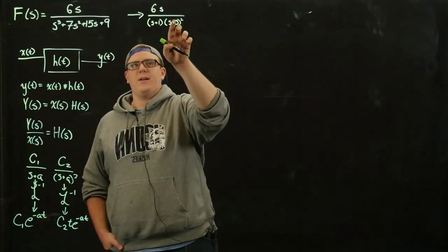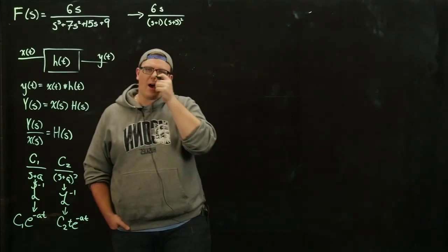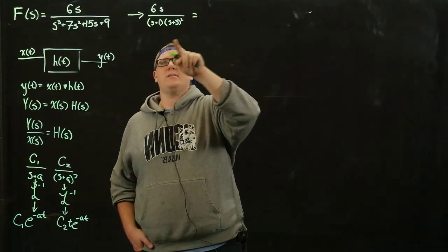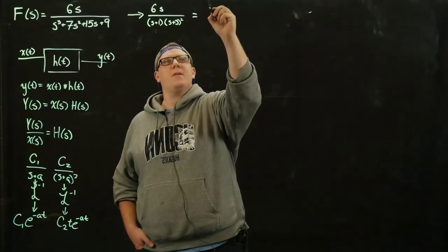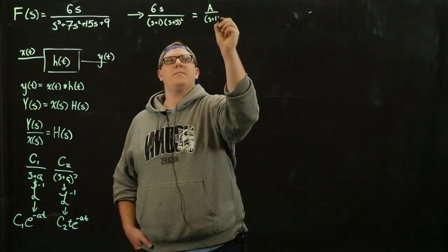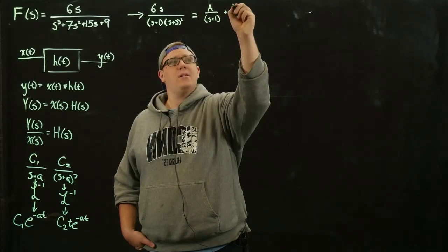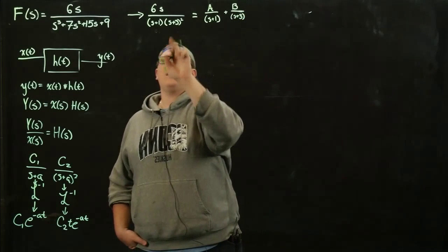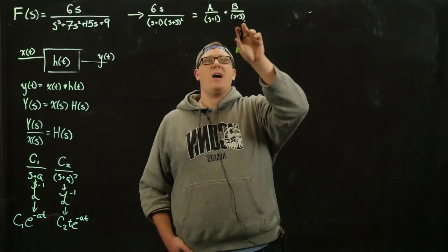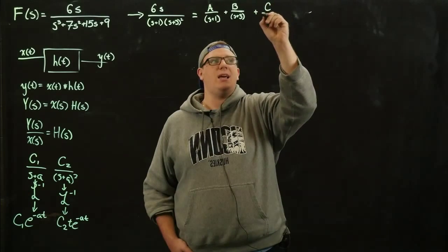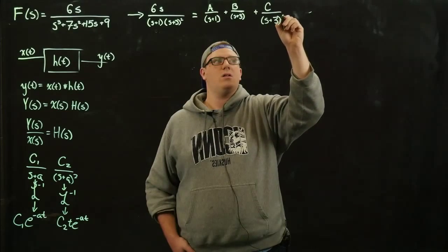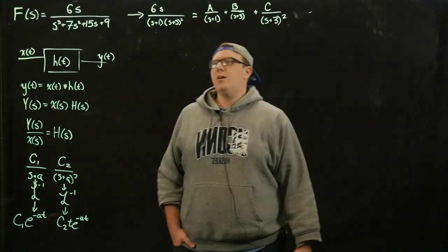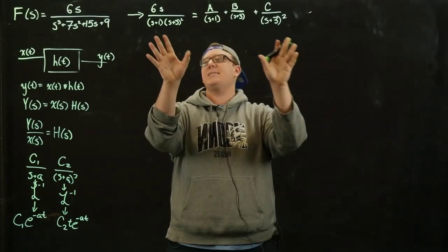The denominator factors as s plus 1 times s plus 3 squared. Now we write this in partial fraction decomposition form. We take the first factor and say we want a term a over s plus 1. Then we add b over s plus 3 for the next root. But s plus 3 is a repeated root — because it's repeated twice, we also need a term c over s plus 3 squared. So we want to find a, b, and c such that these are equivalent.